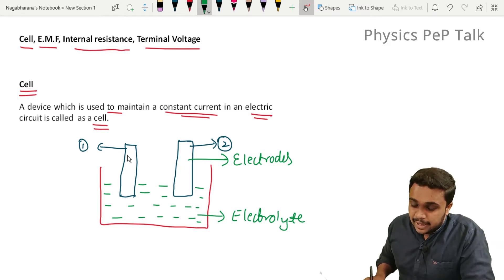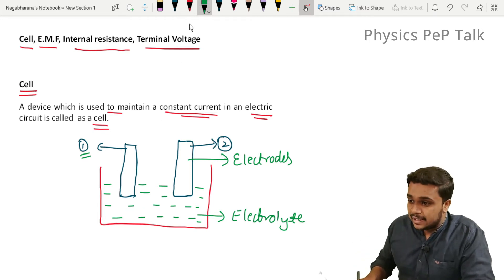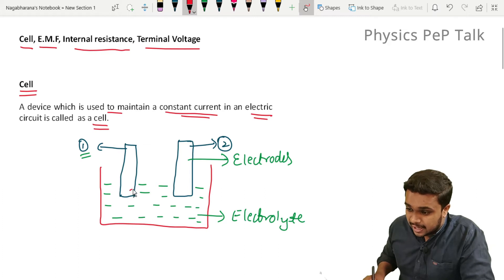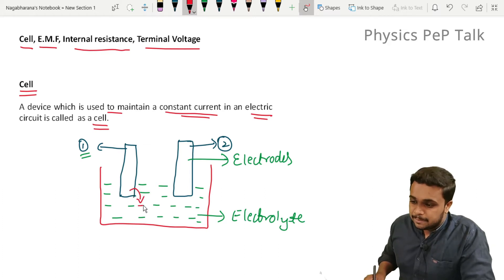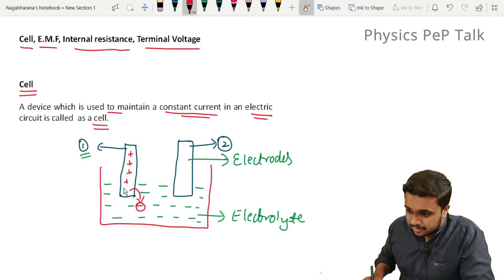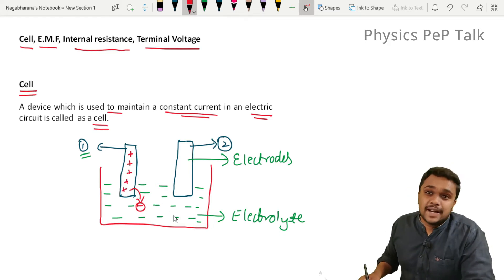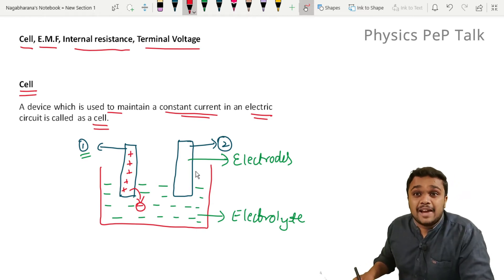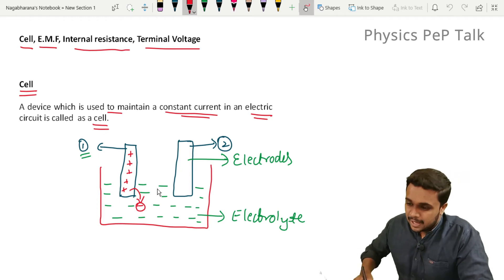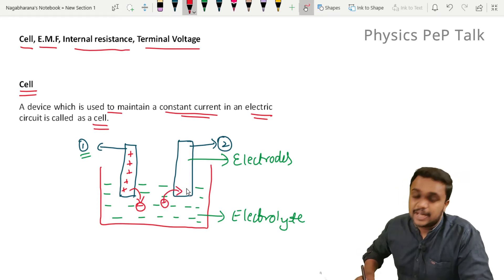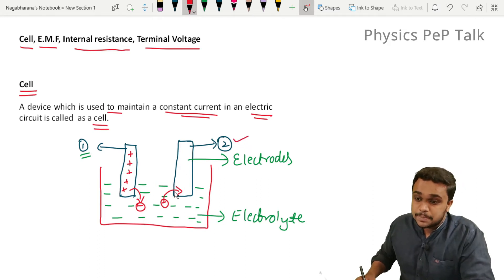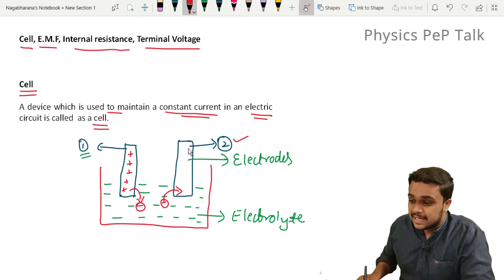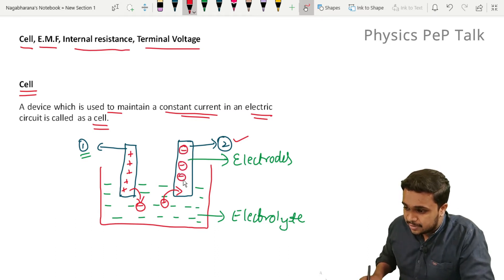The electrode made out of material 1 loses electrons to the electrolyte, and by losing electrons this electrode gets positively charged. The other electrode, made of material 2, has the capacity to absorb those electrons. The electrons get transferred onto this electrode, and as a result this electrode gets negatively charged.